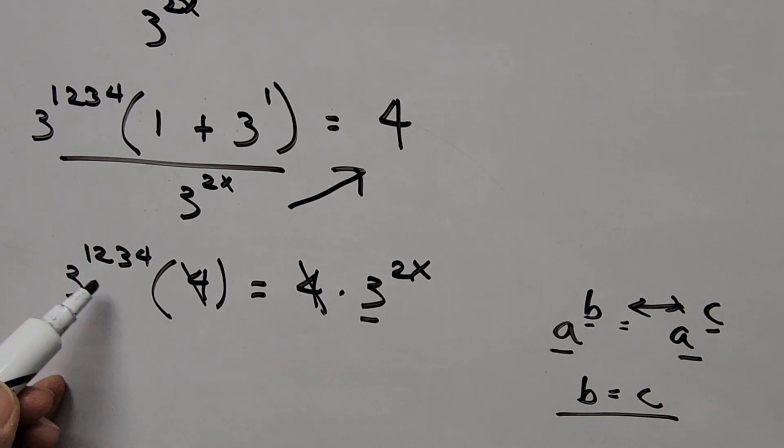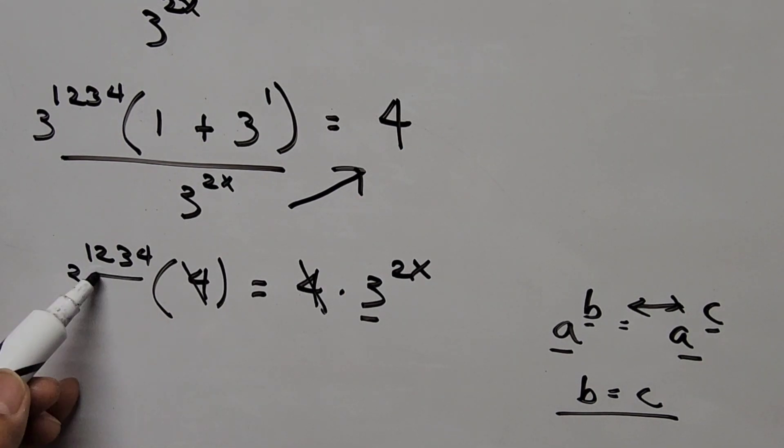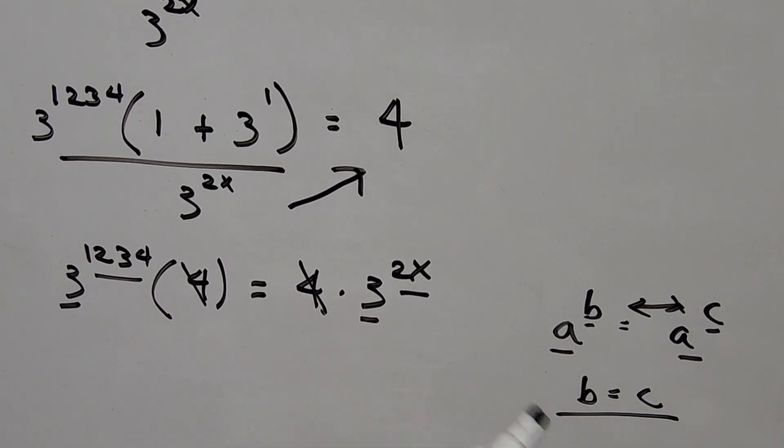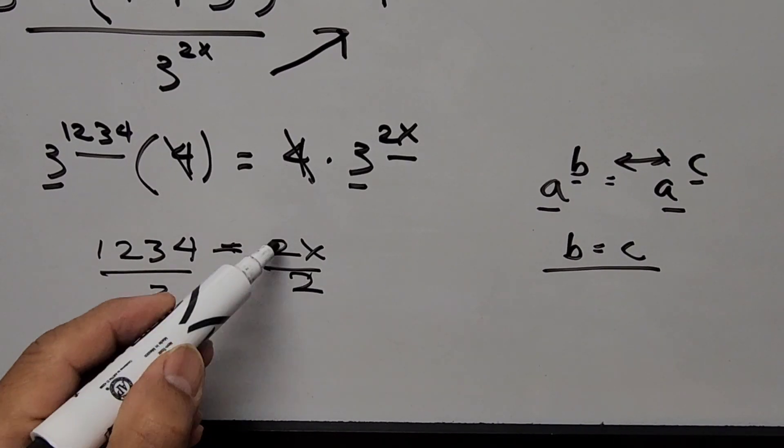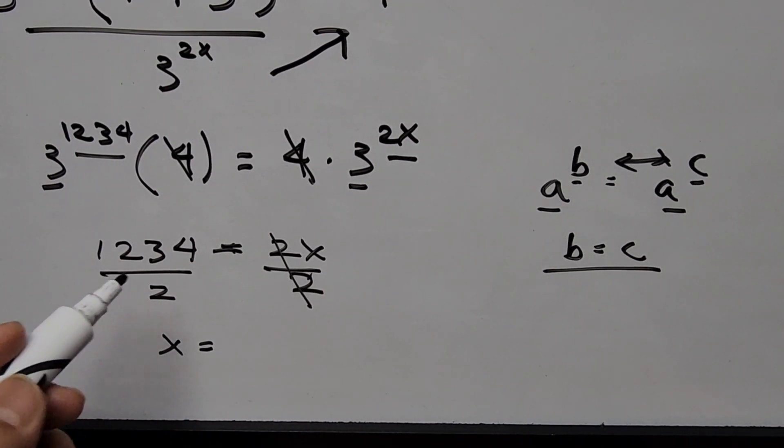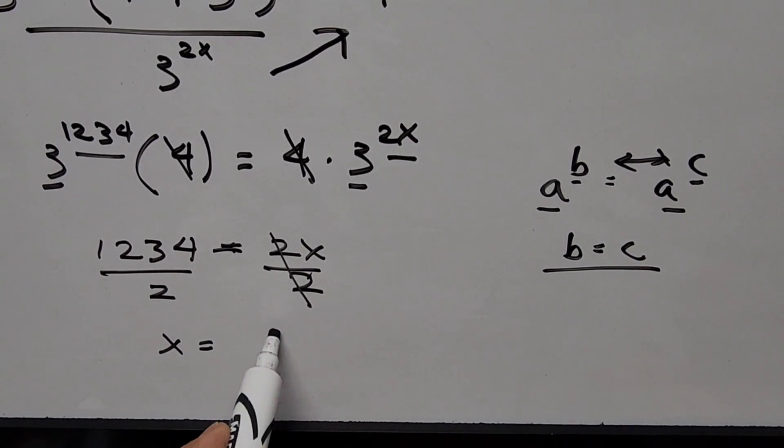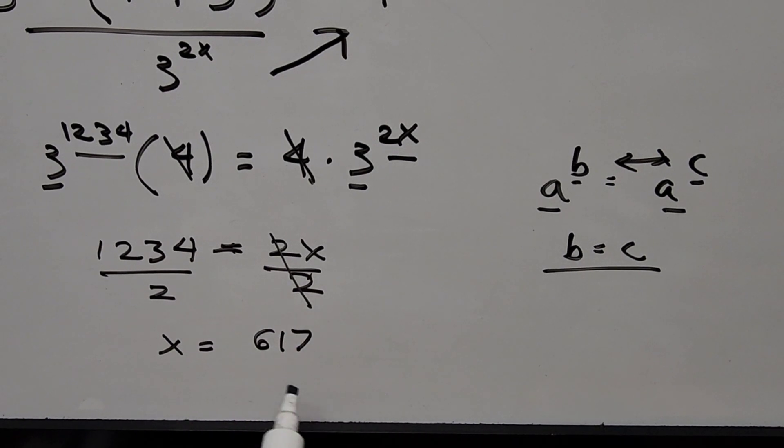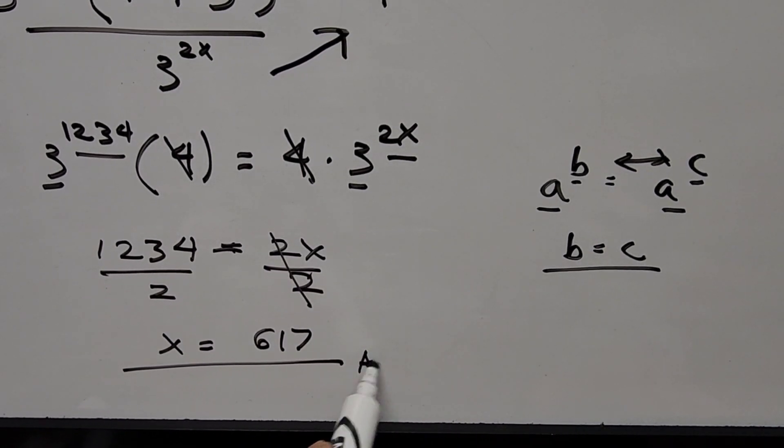So from here this means this exponent is equal to this exponent. So the equation now becomes 1234 is equal to 2x. Dividing by 2, x is equal to 1234 divided by 2, that is 617. So this is now our final answer.